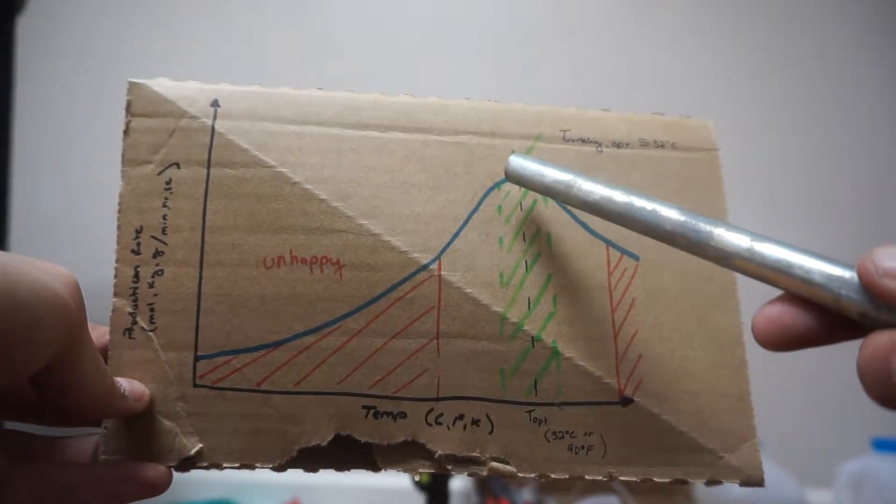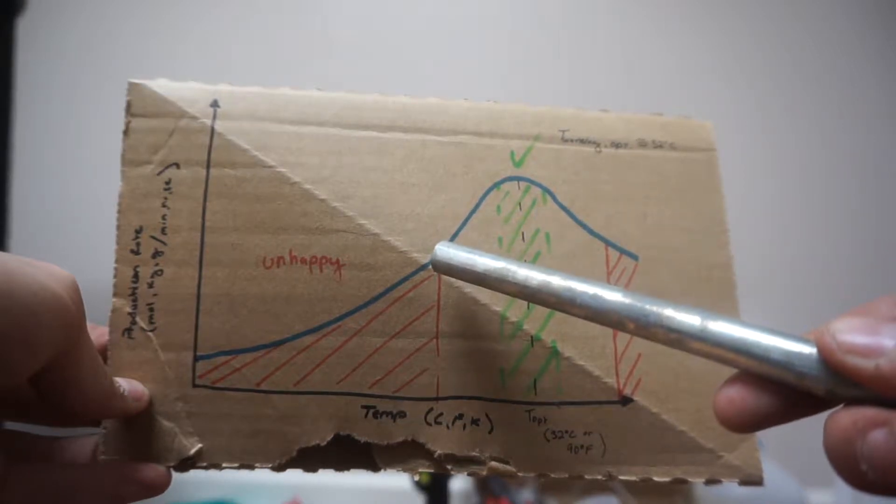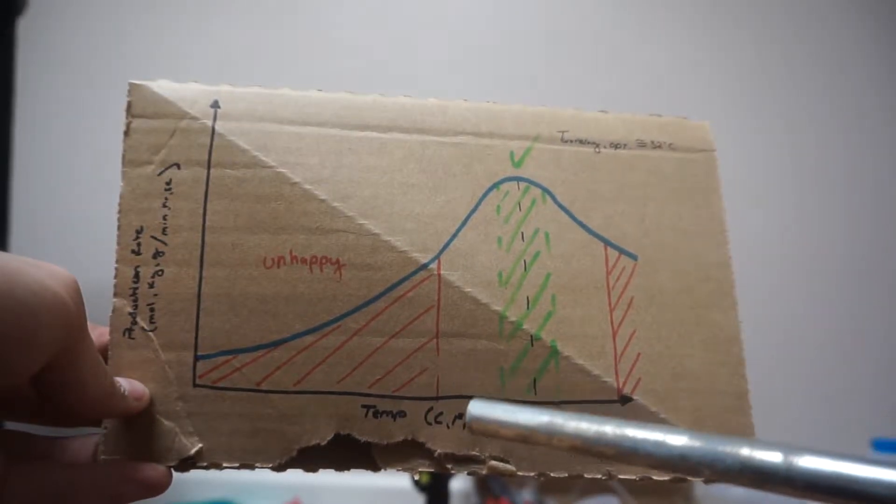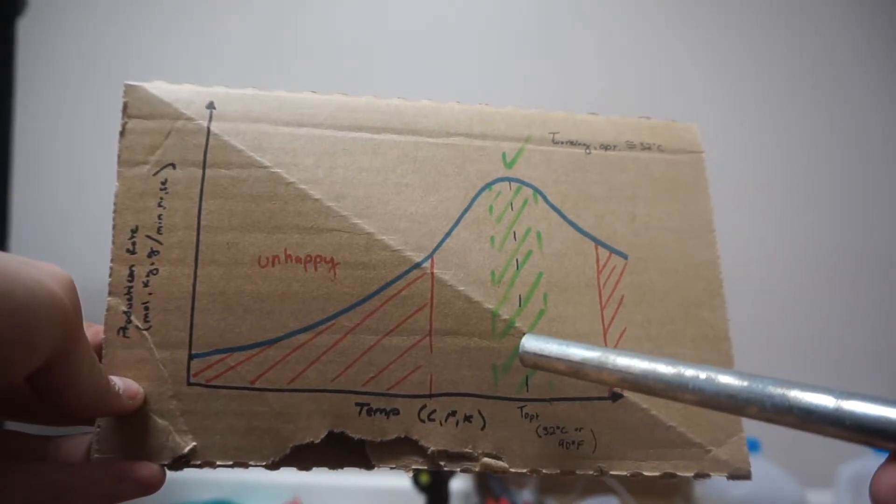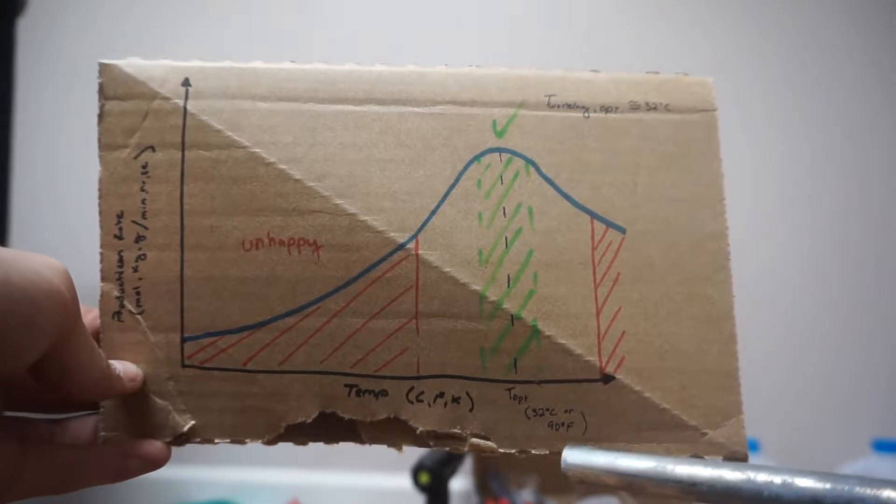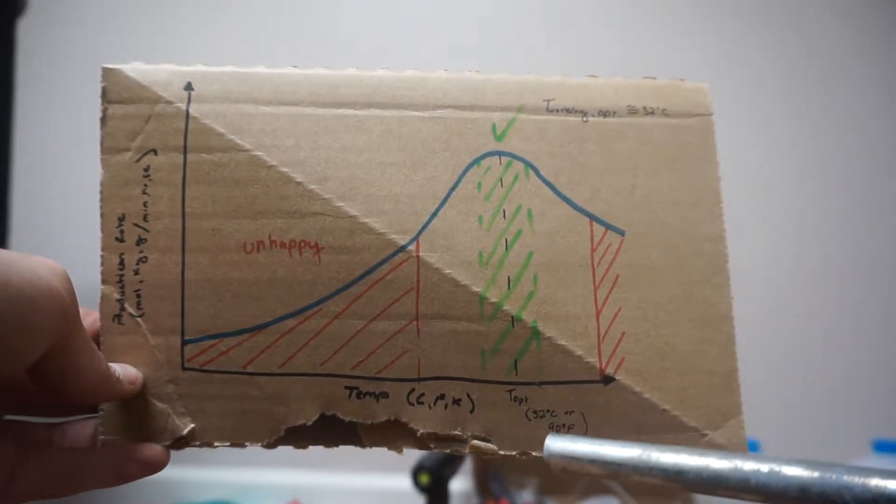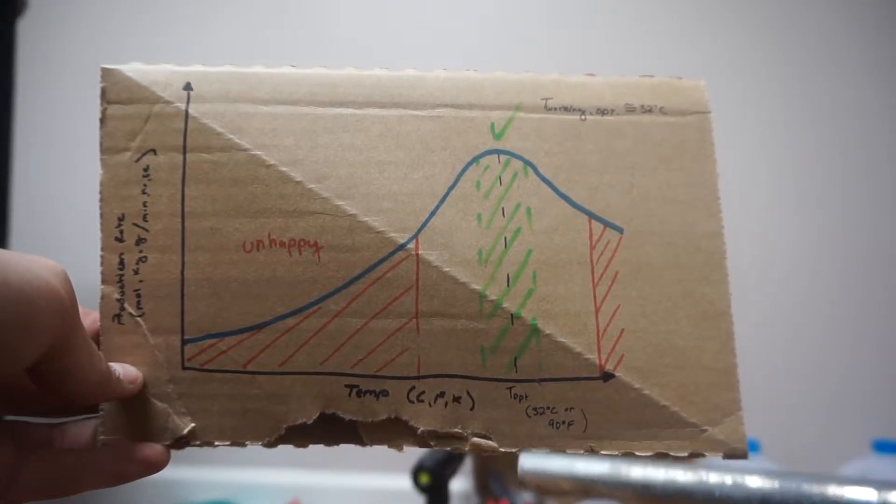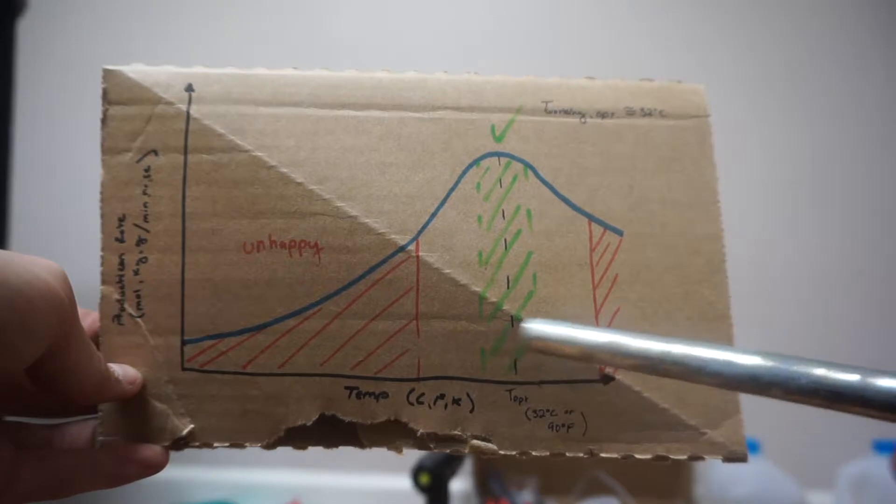But also because it's an optimum, as soon as we get over this certain hump, then we'll start losing productivity very quickly as we change temperature. So pretty much anything within one or two degrees of 32 degrees C is going to be pretty close to the optimum production rate. And that's really what we're shooting for. You're not going to get too big of an increase by getting it exactly on 32, you just got to get in that range.